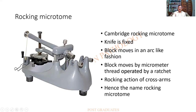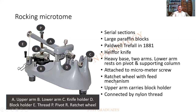The block is maneuvered by a micrometer thread operated by a ratchet. There are two arms called the cross arms, and they keep rocking — hence the name, the rocking microtome. There is a pivot holding one arm; A-B is the lower arm, E is the string, R is the ratchet wheel, and D is the block holder.